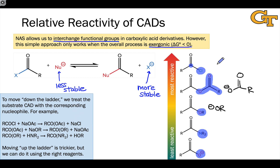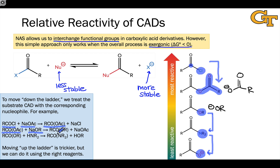With this reactivity ladder in hand, we can think about spontaneous substitution reactions as involving movement down the ladder — for example, the conversion of an acyl chloride to an anhydride, or an ester to an amide, or an amide to a carboxylate. These directions down the ladder should be spontaneous. For example, treating an acid chloride with a carboxylate salt gives an anhydride; treating an anhydride with an alkoxide nucleophile generates an ester and a carboxylate leaving group; and treating an ester with an amine nucleophile gives an amide and an alcohol. These all represent movements down the reactivity ladder.